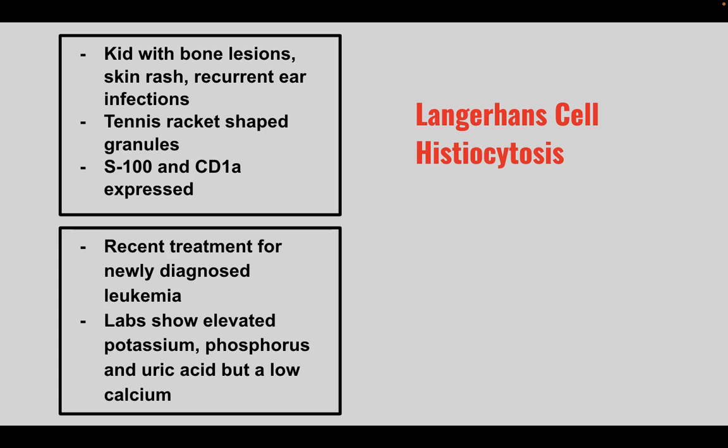Finally, you have a patient that recently received treatment for newly diagnosed leukemia. They are now presenting with elevated potassium, phosphorus, and uric acid, and a low calcium. This is tumor lysis syndrome.